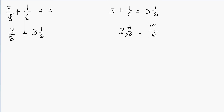So this is how you convert a mixed fraction into an improper fraction: you multiply the denominator with the whole part, then add it to the numerator, and you get the fraction. So I got 19 over 6. I'm going to replace 3 1/6 with 19/6, so we're going to write 3/8 plus 19/6.